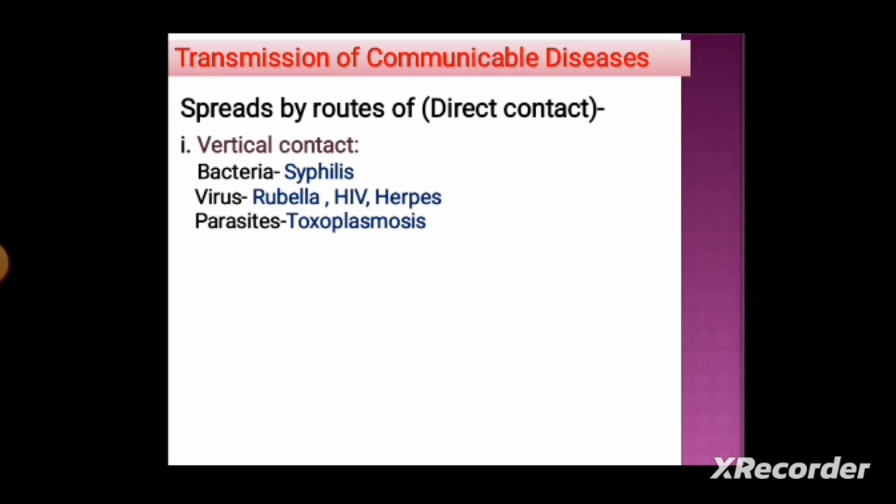Diseases spread by direct contact include vertical transmission. The bacterial disease spread by vertical contact is syphilis, caused by Treponema pallidum. Viral diseases spread by vertical contact include rubella, HIV, and herpes. The parasitic disease spread by vertical contact is toxoplasmosis.